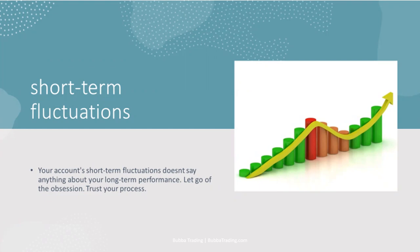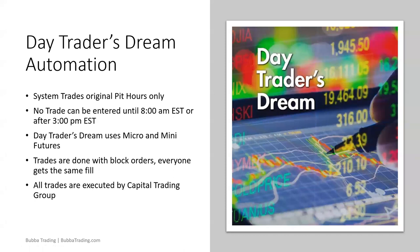You have to understand the statistics of the model you're trading — very similar to markets in general. Markets go up eight and a half percent year over year on average. If you know your probability is a 66% win percentage, then you have to play the numbers, not your opinion. The system trades the pit hours only — all the volume still occurs during what used to be the original pit hours.